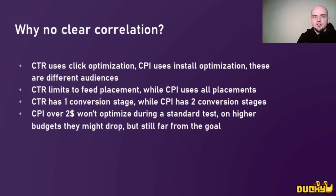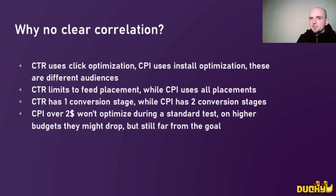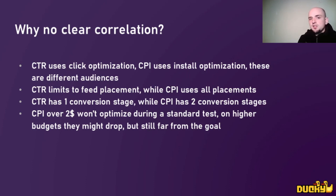So why no clear correlation? There are a few reasons. The first one is that when we use CTR, it uses click optimization — and this is a different audience. This is the audience that likes to click, the audience that might not be so interested in actually installing your application but will more likely click. The other type of audience on CPI are people that will more likely install your game. Mostly these are the same audiences, but with slight differences, and in some cases this can make a difference.